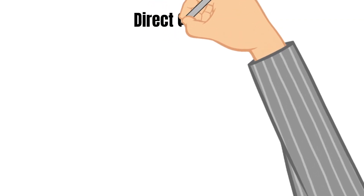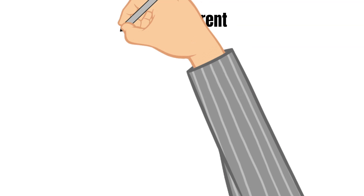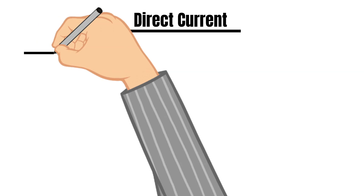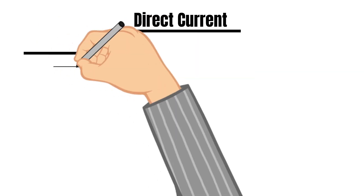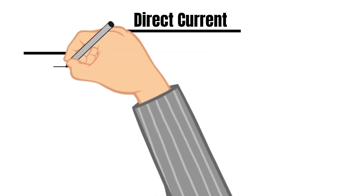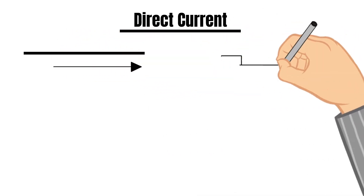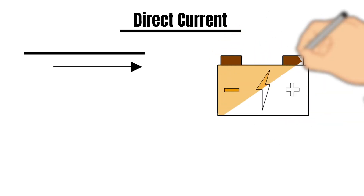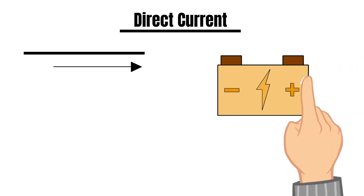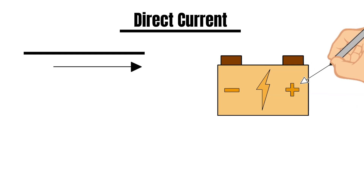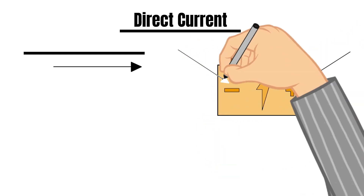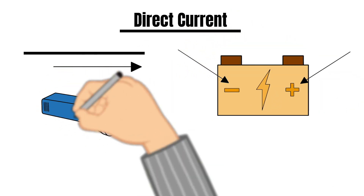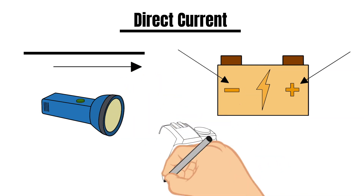Direct current voltage, or DC voltage, travels in a straight line and in one direction only. This type of voltage is commonly produced by stored energy such as batteries. DC voltage sources have a positive and a negative end or terminal, and this type of voltage is commonly used in household items that are battery powered, such as flashlights and cameras.